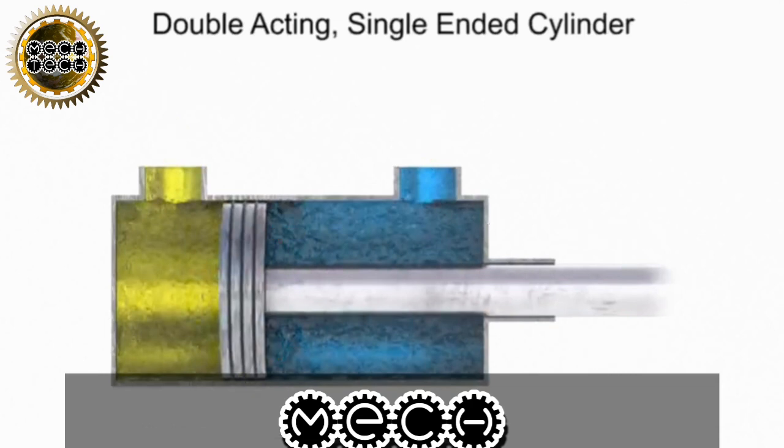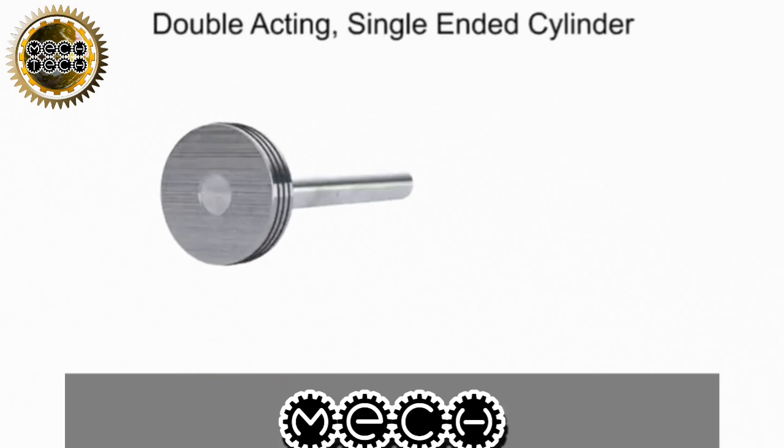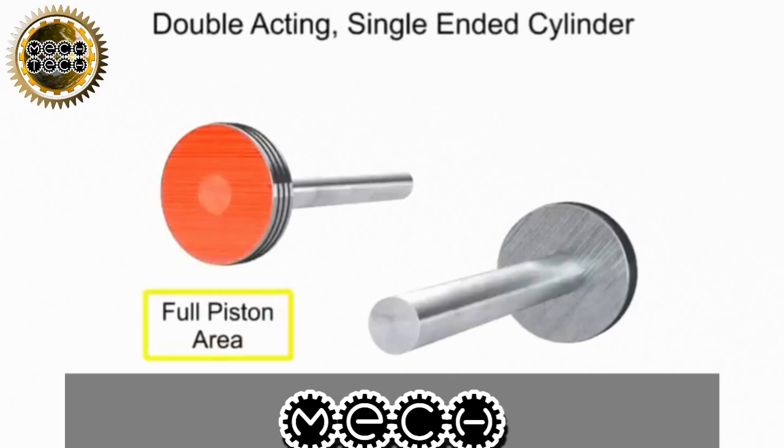To determine the speed of a piston during extension and retraction, we must first determine the significant working areas. The full piston area is the side of the piston without the rod. This is the area that feels pressure as the piston extends. The next significant working area is called the net area. This area is the size of the full piston area minus the area of the rod. The net area feels pressure when the cylinder retracts.